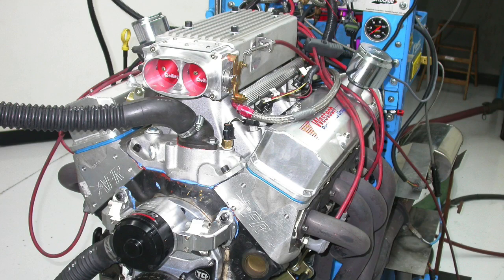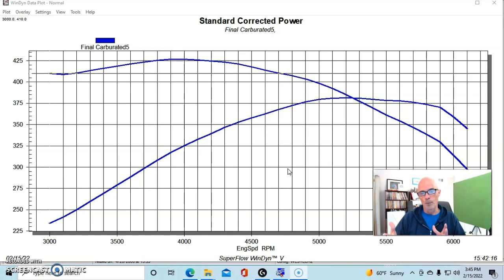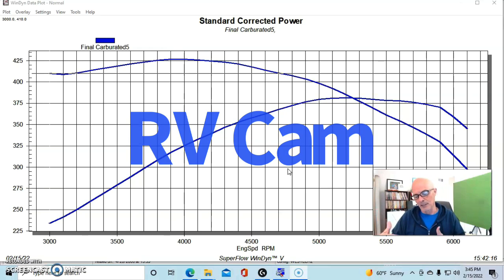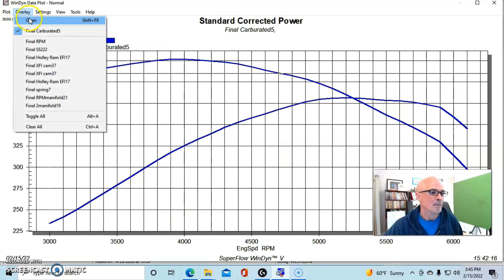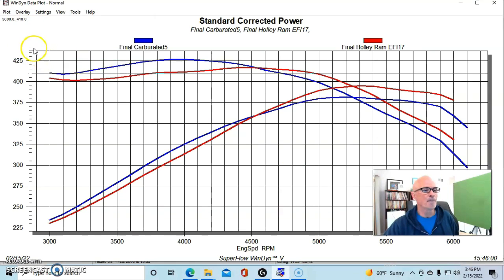We have taken a look at the power difference between the dual plane carburetor intake manifold and the Holly Stealth Ram EFI intake manifold on our mild combination. That 355 Gladiator motor was equipped with the Comp 250 cam, an RV or torque style cam. There are obviously much better cam choices if you're looking to make more power, but what we're going to take a look at is what happens when we do go up in camshaft. There's usually a trade-off in power - you usually have to give up low speed power to get more top-end power.